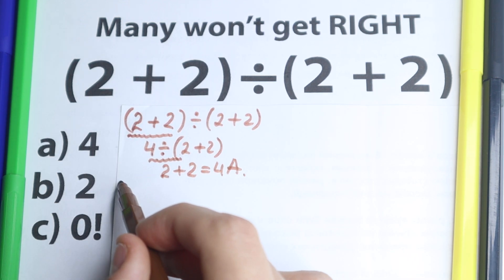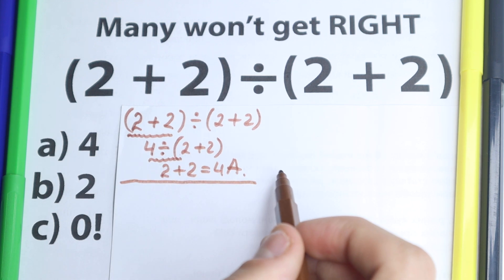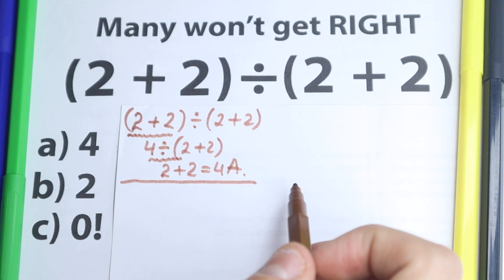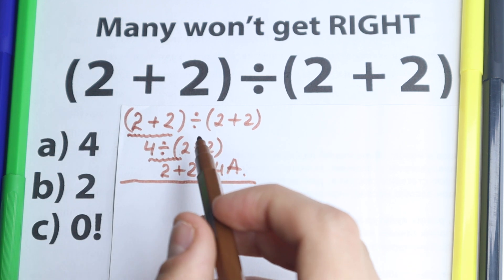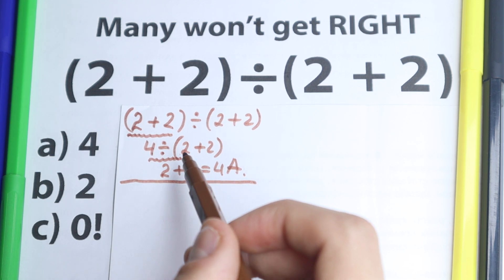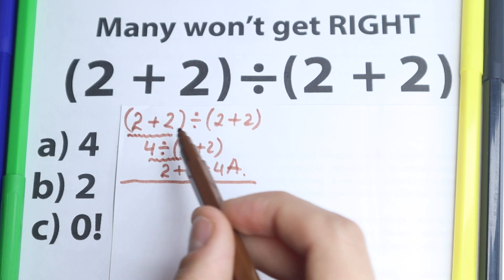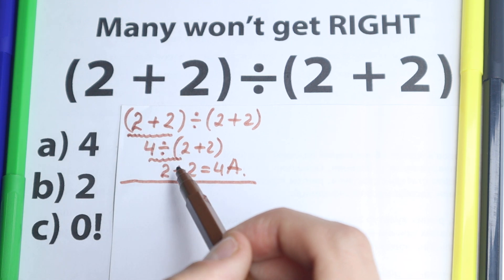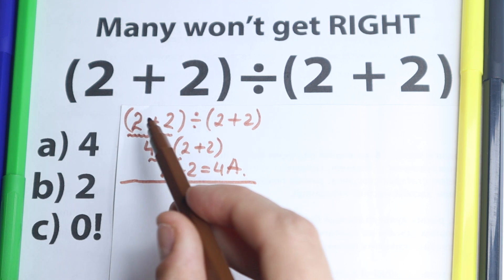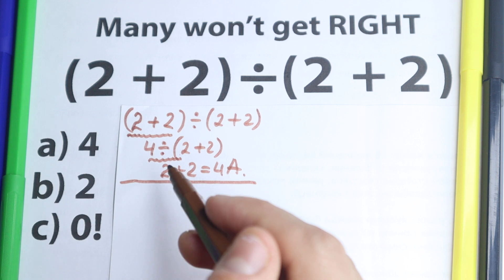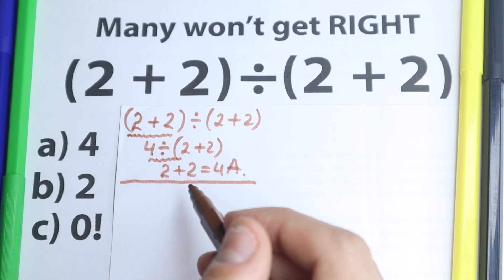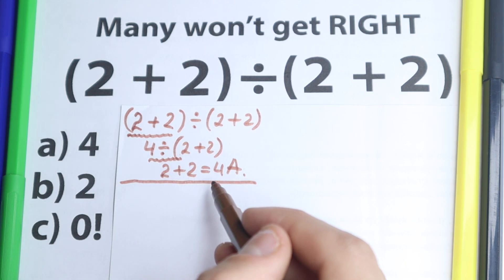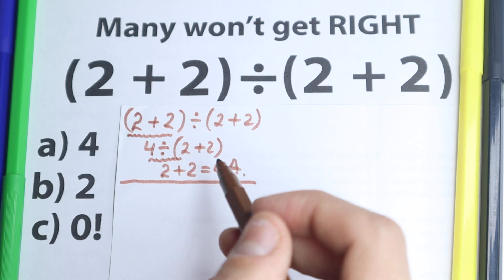One group of students solves it this way, but I want to tell you this is a very bad solution — we absolutely cannot solve it like that. We need to know the order of operations, because this approach is chaotic: first we add, then we divide, then we add again. That is absolutely the wrong order of operations. I wanted to show this solution because many students do it this way, which is really bad.